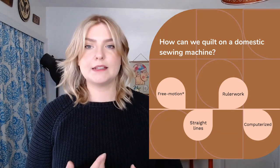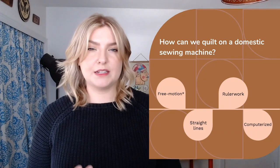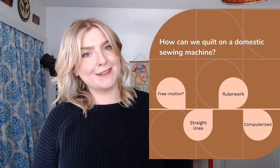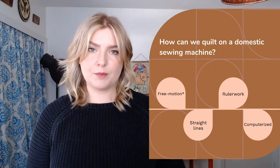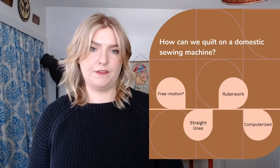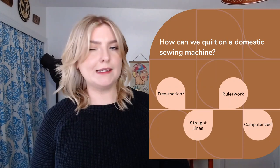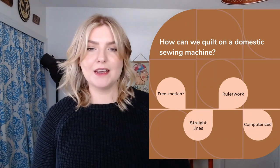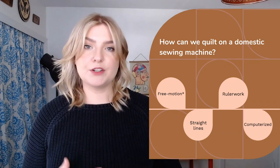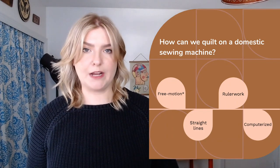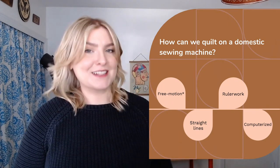Using the Bernina stitch regulator is common on long arm machines — most of those will have stitch regulation that you can turn on and off. We have straight line quilting, and typically this is going to be done with a walking foot. This could be simple stitch in the ditch, or maybe you get a little bit more complex, but ultimately it's all geometric shapes sewn with a presser foot that uses the feed dog to feed fabric straight through the machine.